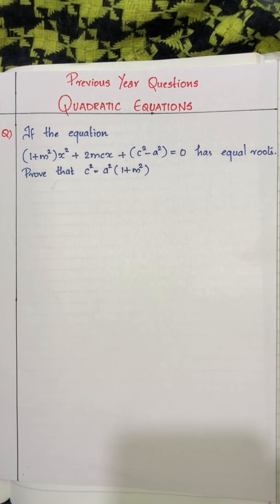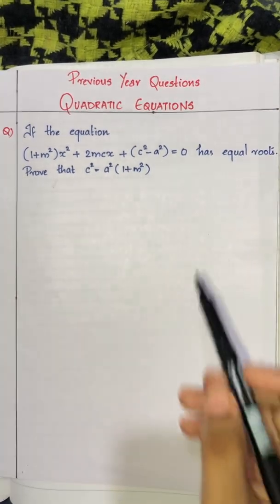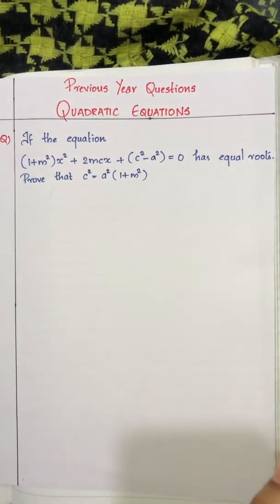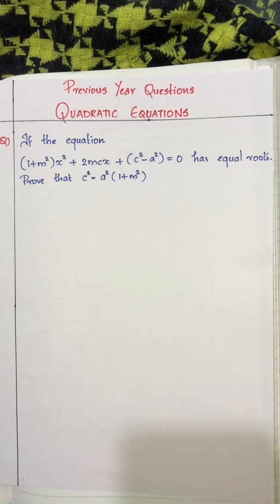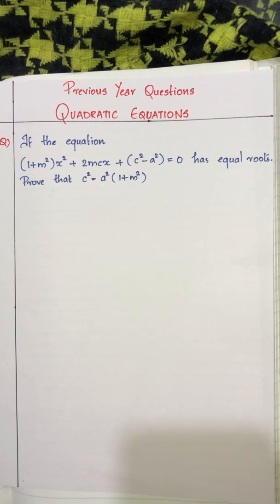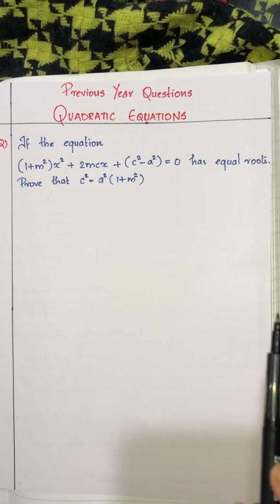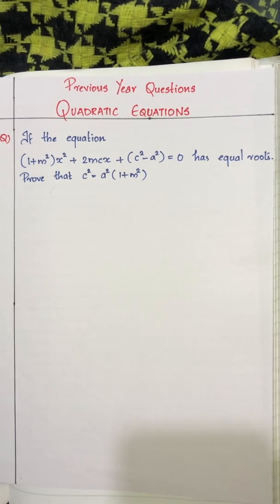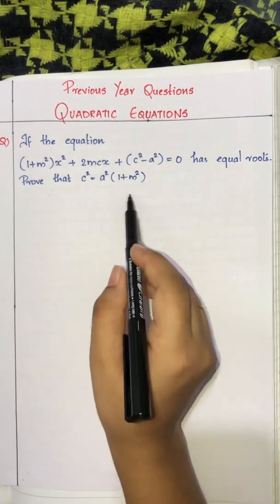In the question, it is given that this equation has equal roots. So we know that b² - 4ac = 0. We need to prove that c² is equal to a² into (1 + m²).